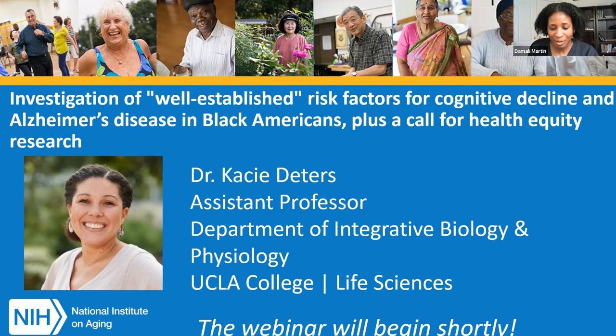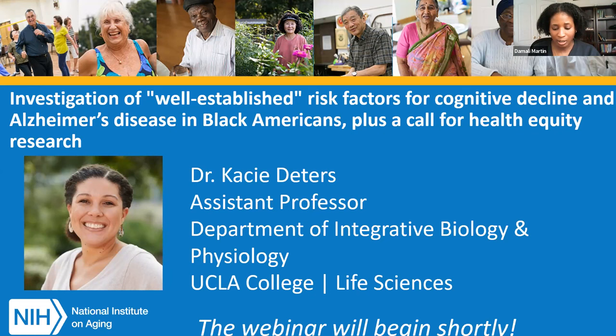Dr. Dieters is an assistant professor in the Department of Integrative Biology and Physiology at UCLA. Her research focuses on ethnic and racial disparities and predictors for cognitive decline and AD, ADRD, and older adults, primarily from the Black community. Her goal is to understand the intersection and contributions of genetics and social environmental factors to cognitive decline and ADRD, utilizing techniques including genetic, neuroimaging, neuropsychological assessments, social and environmental factors, and fluid-based biomarkers.